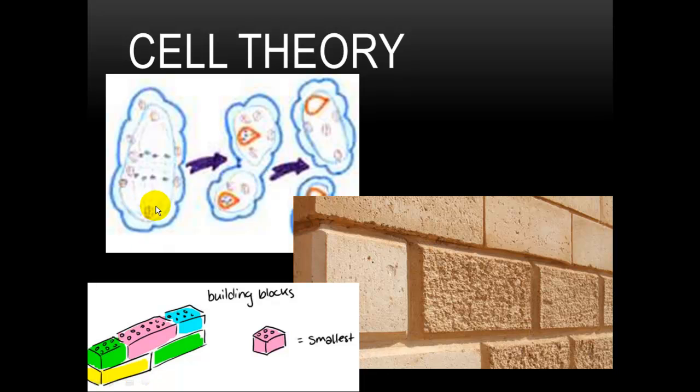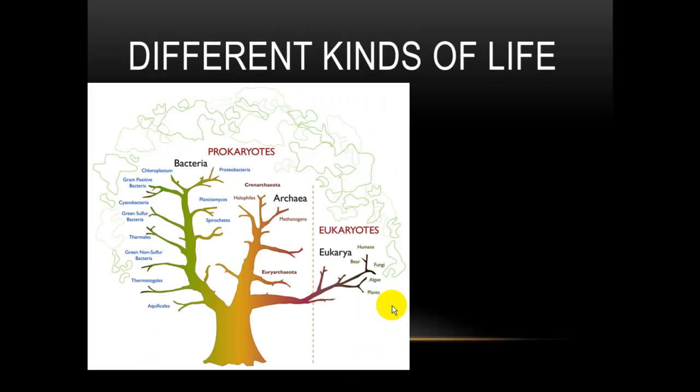So, cell theory says all cells come from pre-existing cells. Cells are the building blocks of life, like in this wall. The bricks are the building block of this wall. And all life is made of cells. So, that is a review. No one's going to come out and ask you that. That is just something review.